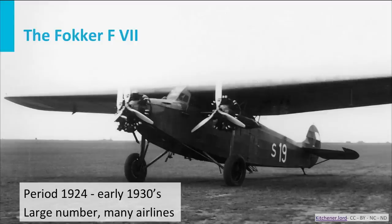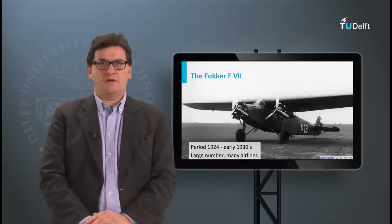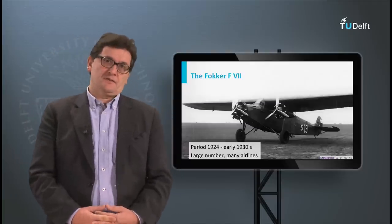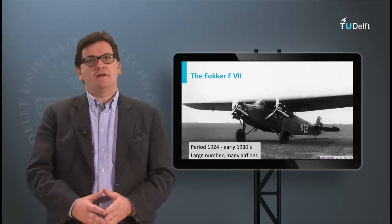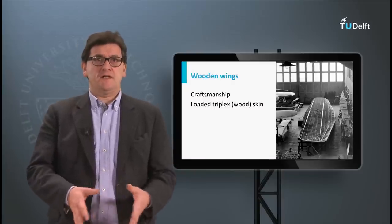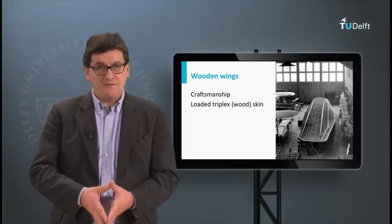A very famous aircraft in those days using such a wing was the Fokker FVII. This aircraft was very successful in Europe and the United States. The wing was a thick wooden wing covered by plywood, and the fuselage was a truss structure covered with linen. The linen had only a protective function, keeping out the bad weather and the cold. In this slide you can perfectly see the inside structure of such a Fokker FVII wing.